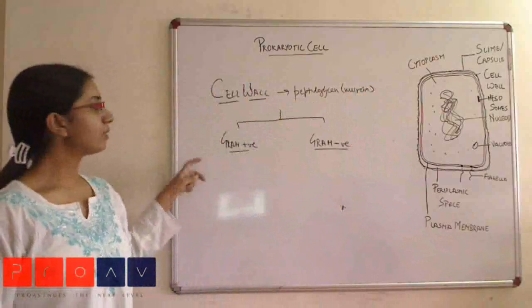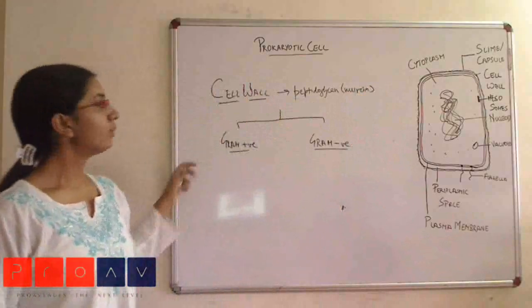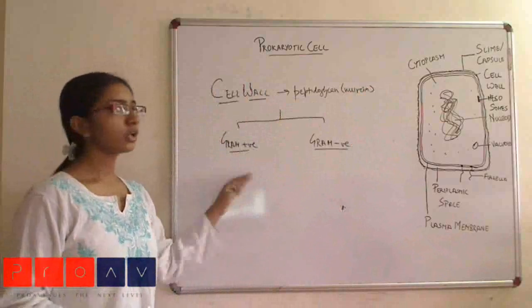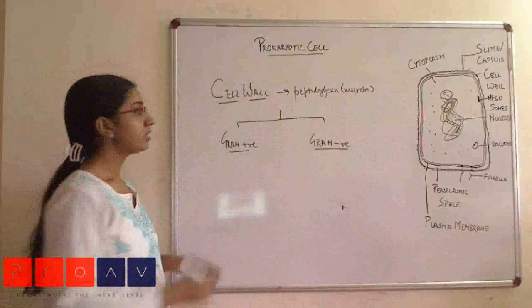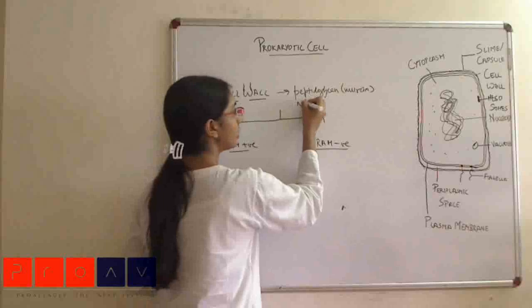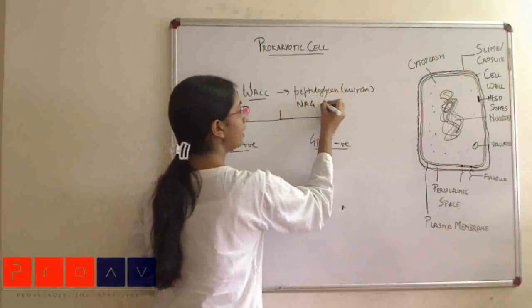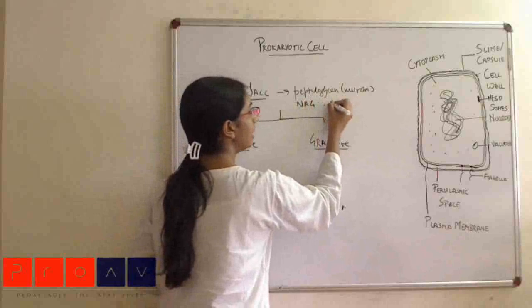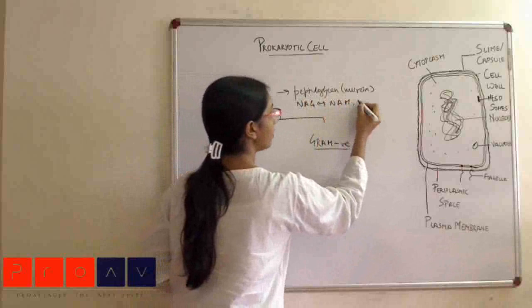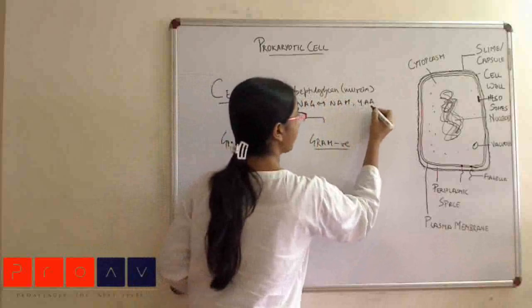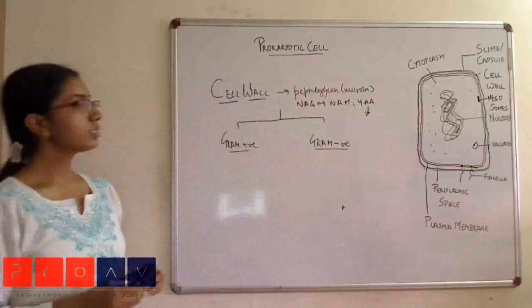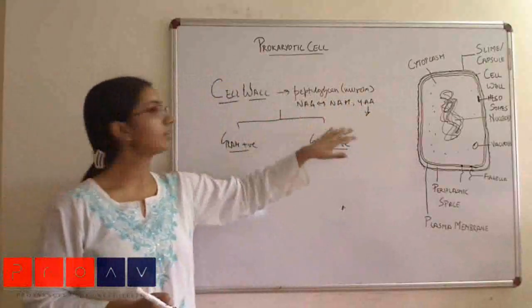In gram-positive bacteria, the cell wall primarily consists of peptidoglycan units cross-linking between each other. Peptidoglycan actually consists of N-acetylglucosamine (NAG) and N-acetylmuramic acid (NAM). Apart from that, there are four amino acids present inside the cell wall. The basic composition of peptidoglycan remains generally common.